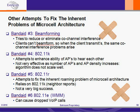Band-Aid number four is 802.11k. 802.11k attempts to enhance the ability of APs to hear each other. It is not very effective as the number of APs and AP density increases, because the algorithm does not scale very well. 802.11r attempts to fix the inherent roaming problems of the microcell architecture. 802.11r relies on 802.11k, in particular 802.11k's neighbor reports, and as a result, 802.11r has not been a very big success.